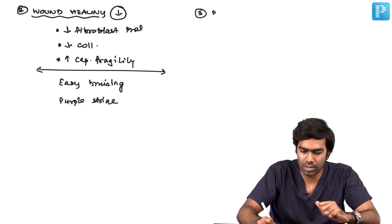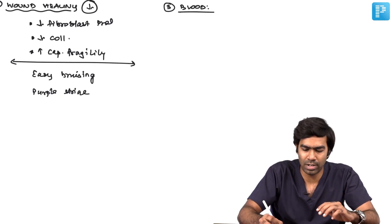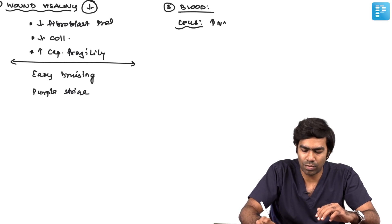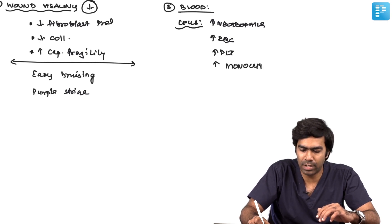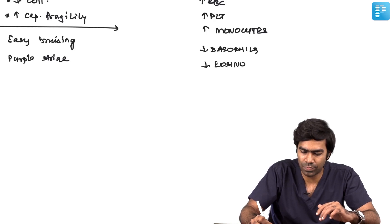They are very powerful immunosuppressive agents. What are the effects on blood cells first? They increase neutrophils, increase RBCs, increase platelets, and increase monocytes. The BEL group of cells will be decreased - basophils, eosinophils, and lymphocytes will be reduced because of cortisol action.